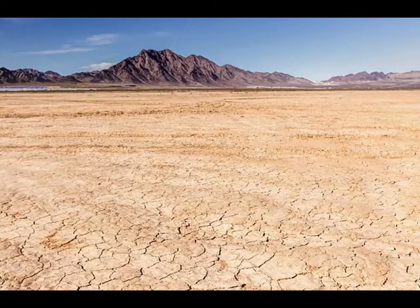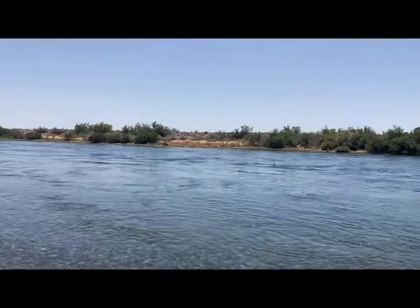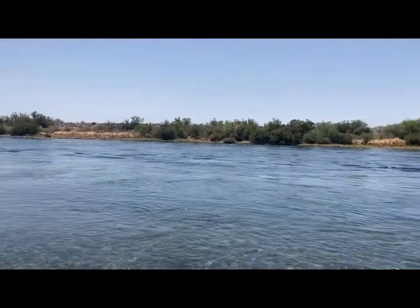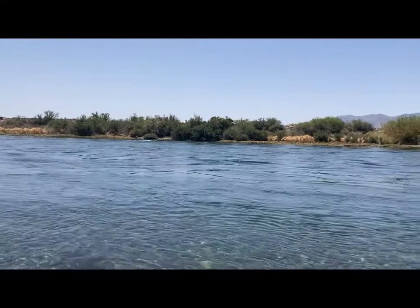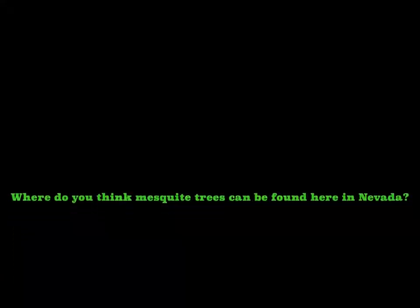The mesquite tree population plays an important role on the wildlife found here in the Mojave Desert, but lately they've been on the decline. Currently, there are many theories on why they've been dying out, but no one can really pinpoint the reason why right now. You can find mesquite trees in a plethora of different places like arroyos, dried up lakes, oases, and riverbanks. These trees tend to grow where the texture of the soil is medium to fine. With that being said, where do you think mesquite trees can be found here in Nevada?